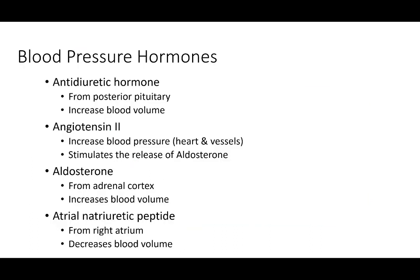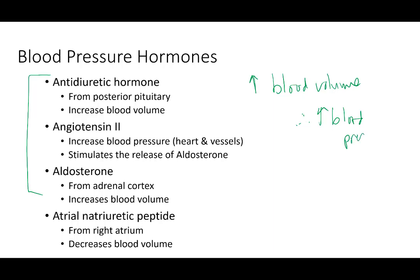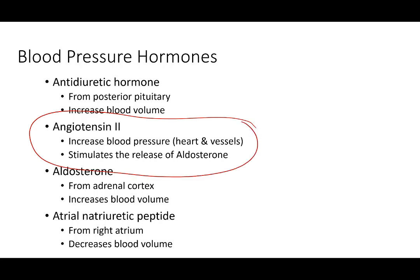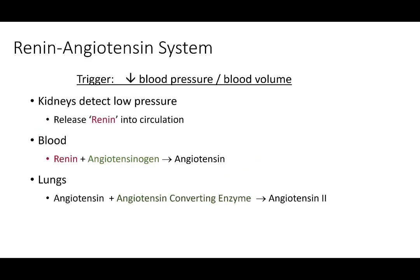The blood pressure hormones we'll cover now will also be revisited in Unit 4 when we discuss the kidneys. The first three effectively increase blood volume and therefore blood pressure. The only one that decreases blood volume — and therefore blood pressure — is a fourth hormone we'll address.